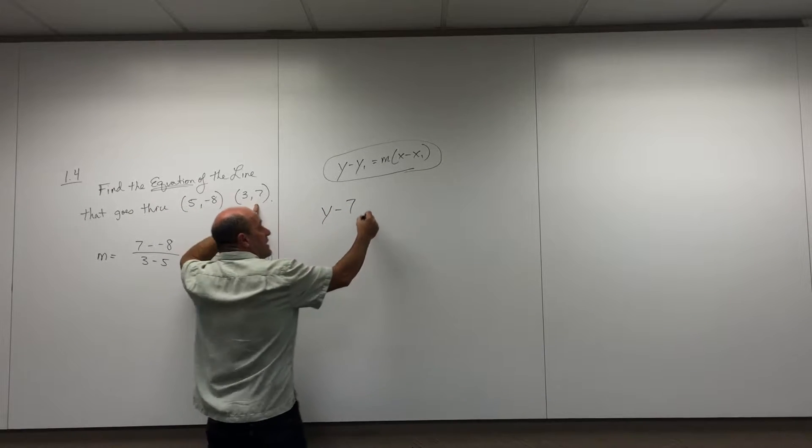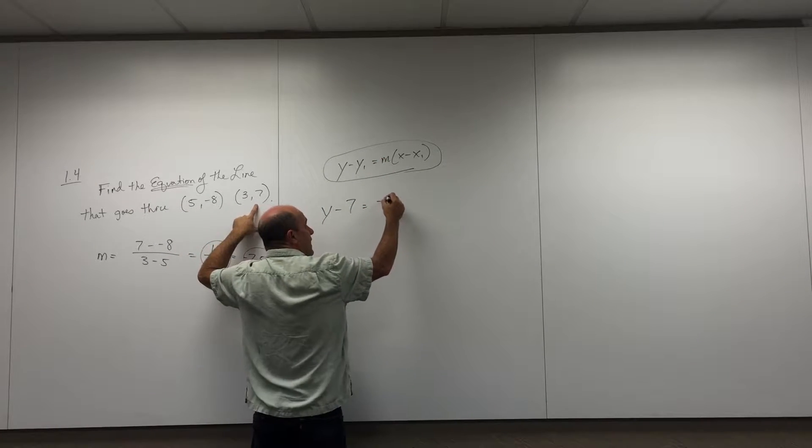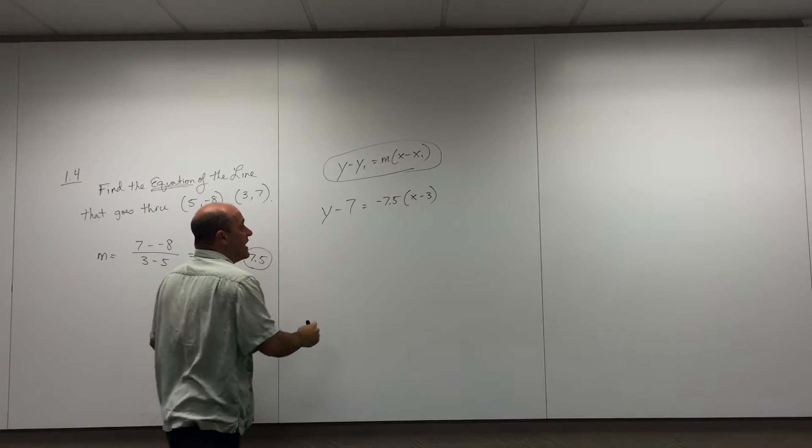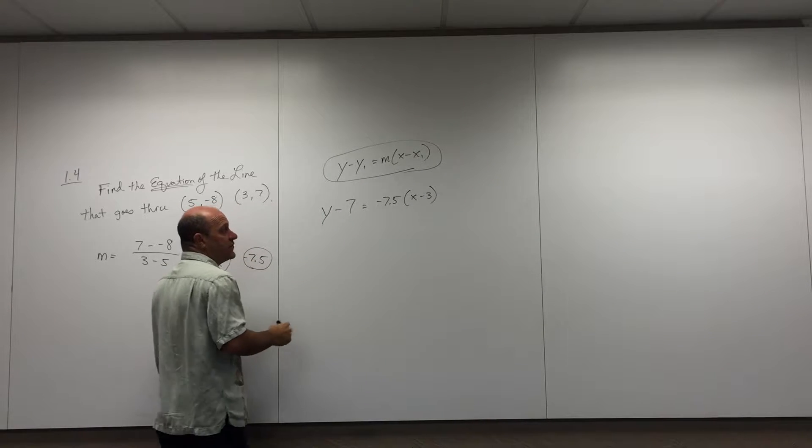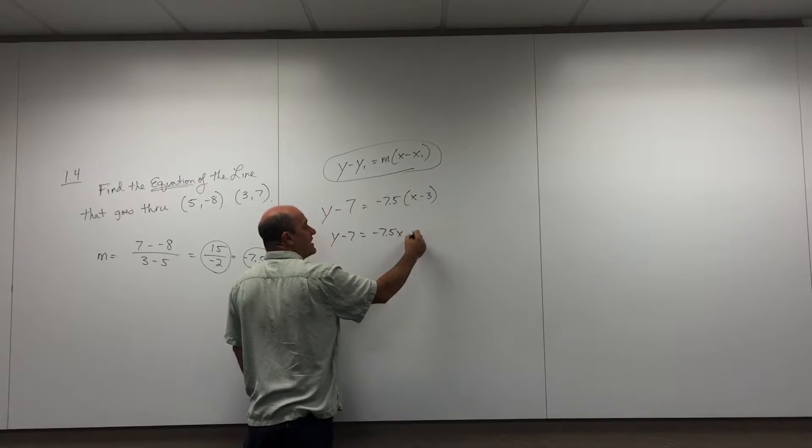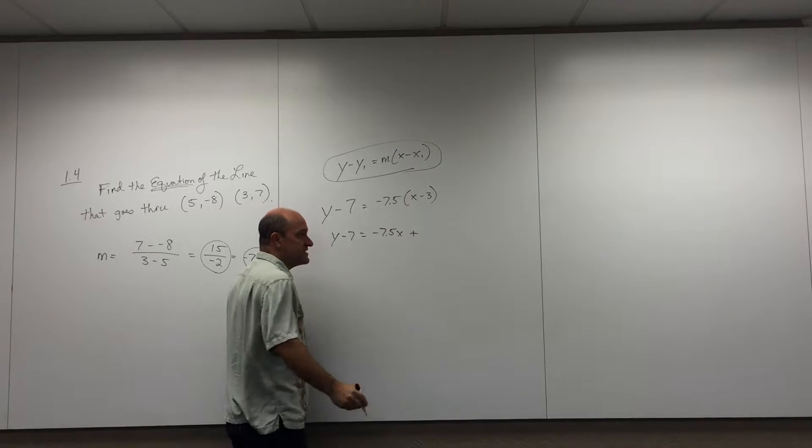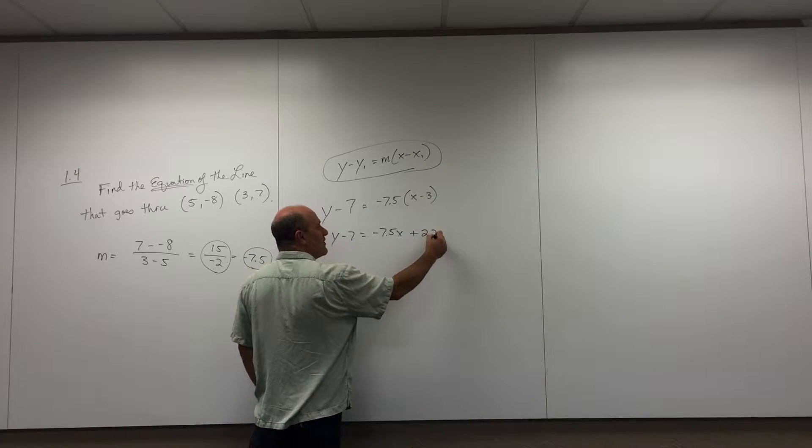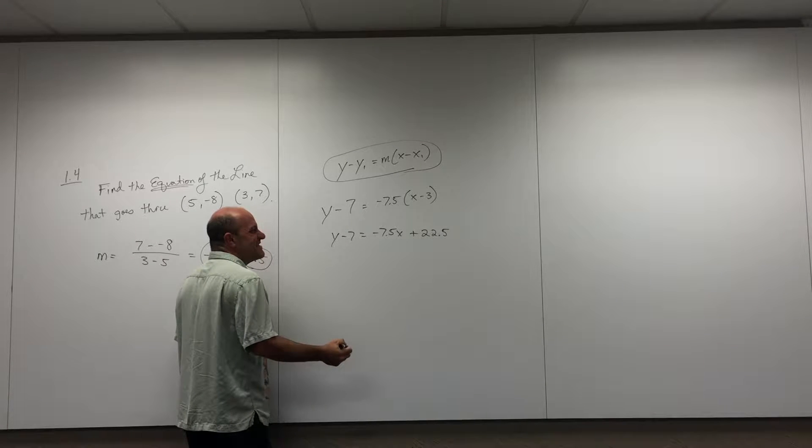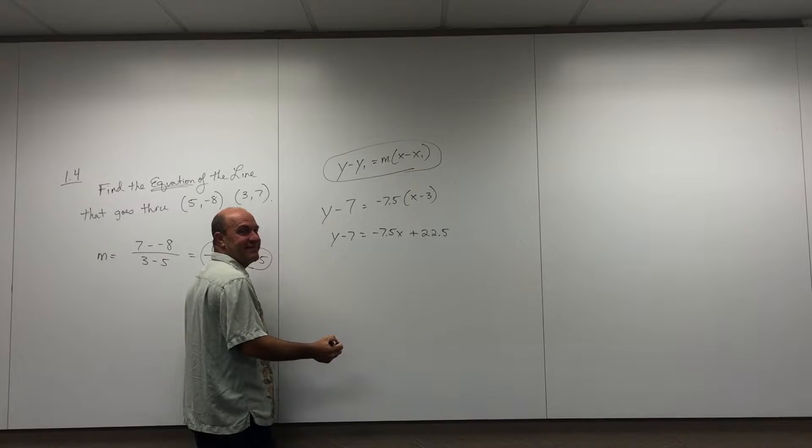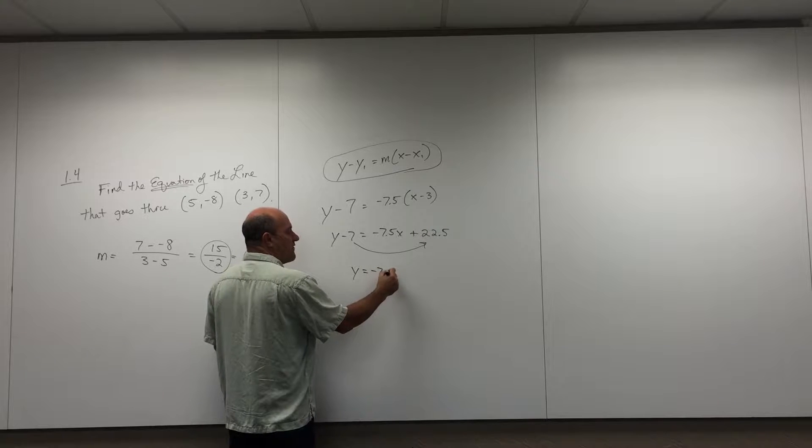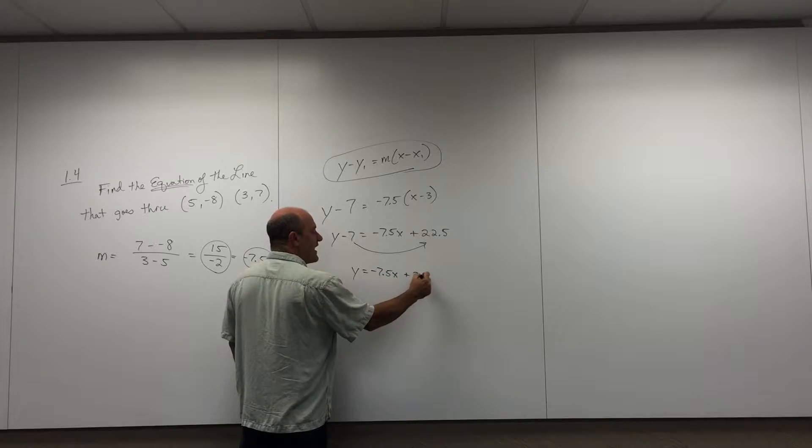I'll just use this point and this slope, and here we go. y minus 7 equals that slope, negative 7.5, times x minus 3. I'm going to go with the decimal and just distribute. That's a negative 7.5x plus 22.5 maybe. And then I'm going to add the 7. So y equals negative 7.5x plus 29.5.